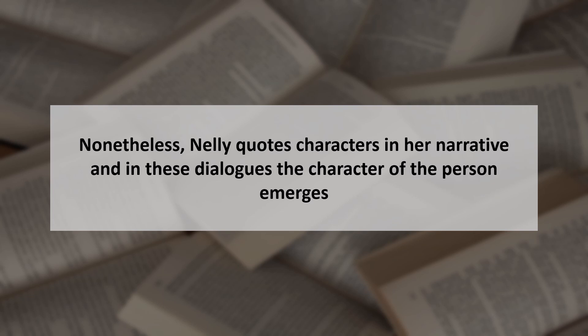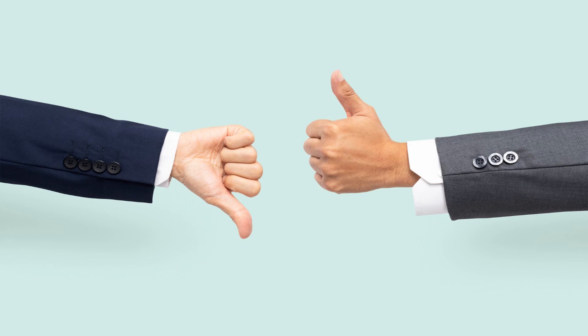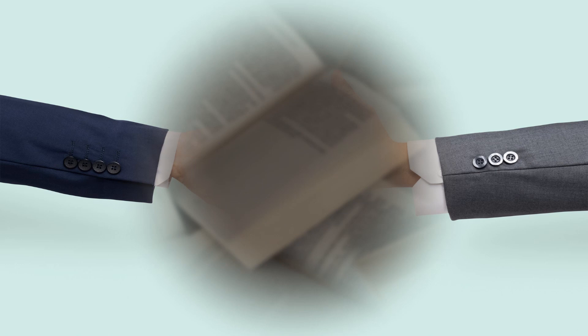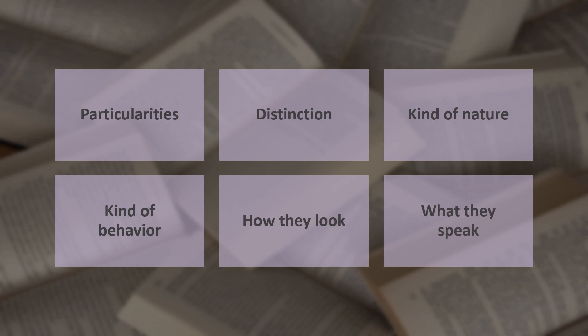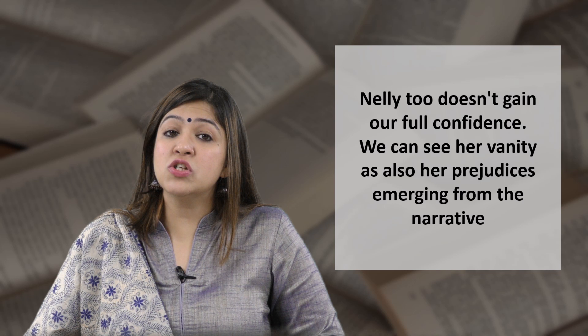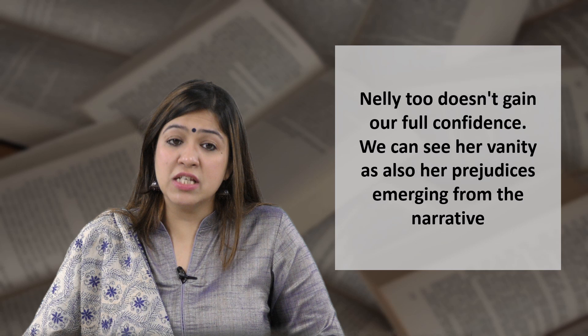That is the difference between the two narrative styles: Lockwood's and Nellie Dean's. Nellie Dean quotes characters in her narrative, so characters are given full-fledged dialogues and their character emerges through those dialogues. She is also upfront about her likes and dislikes. Through these verbatim dialogues, characters talk to one another and we can see their idiosyncrasies, peculiarities, nature, and behavior — we analyze characters through their speech. Unlike Lockwood, who describes more and gives less dialogue, Nellie Dean shows us the entire scene, and in doing so gains our confidence.